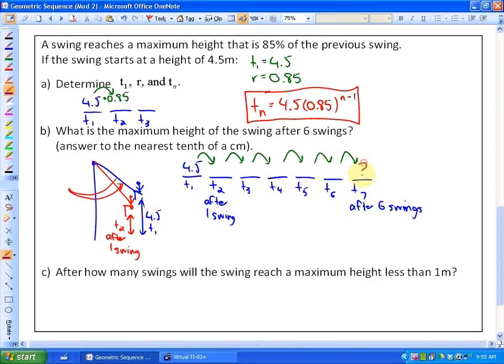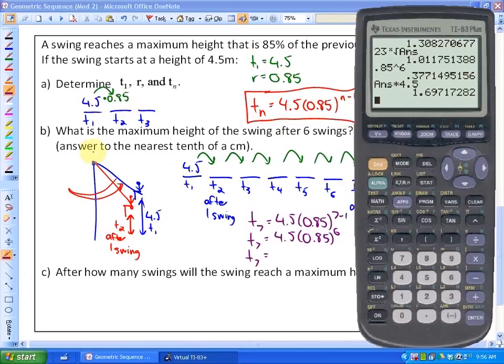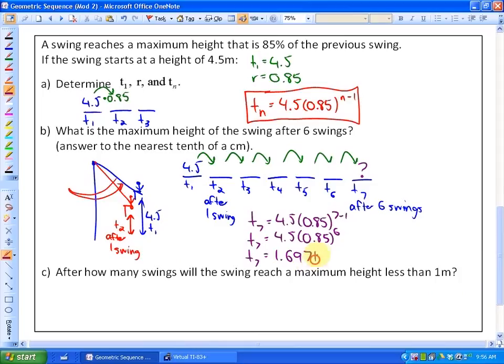Either way you do this, we're trying to find the height after six swings, which is term 7. So if we use the general formula, that would be term 7 equals 4.5 times 0.85 to the 7 minus 1. So after six swings would be 4.5 times 0.85 to the 6. So finally, if we just figure this out, exponents first, so 0.85 to the power of 6, and then times that by 4.5. The question says answer to the nearest tenth of a centimeter. I'd have to times that by 100 to get it into centimeters. So that's going to be 169.7 centimeters after six swings.